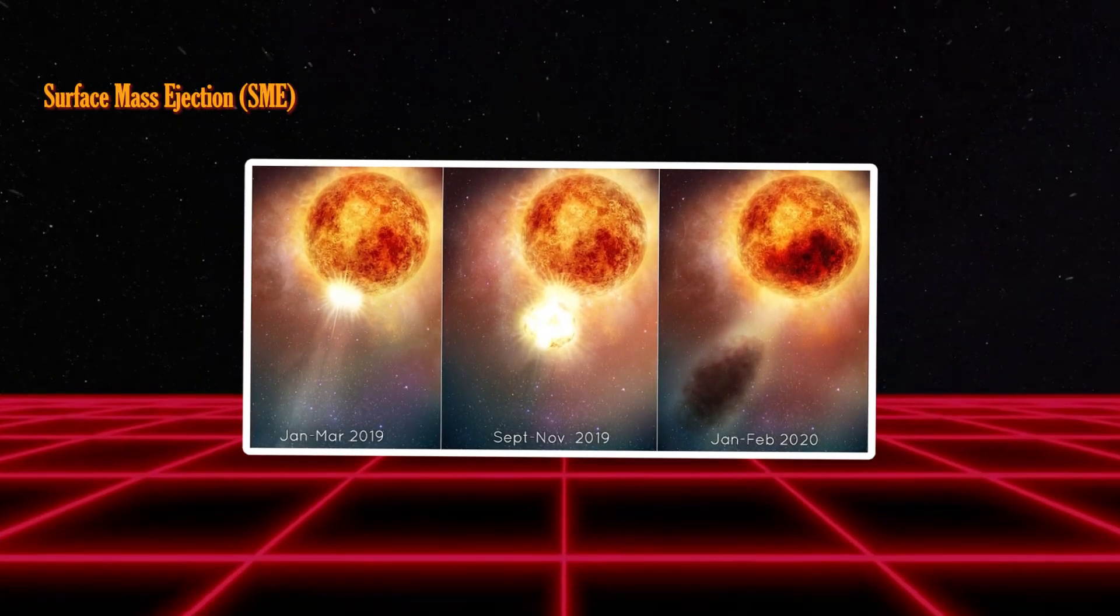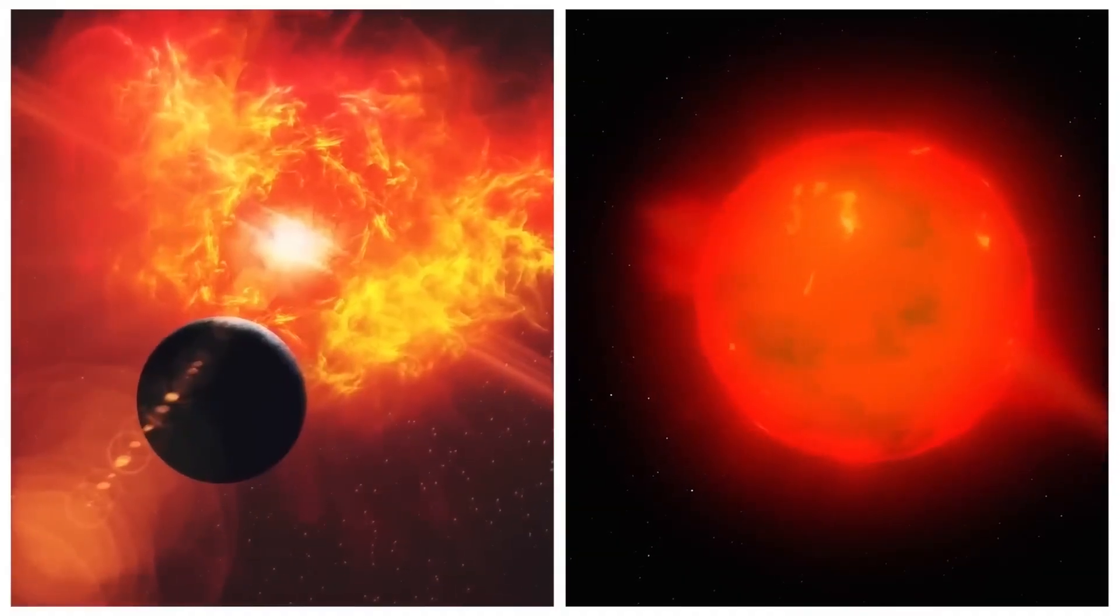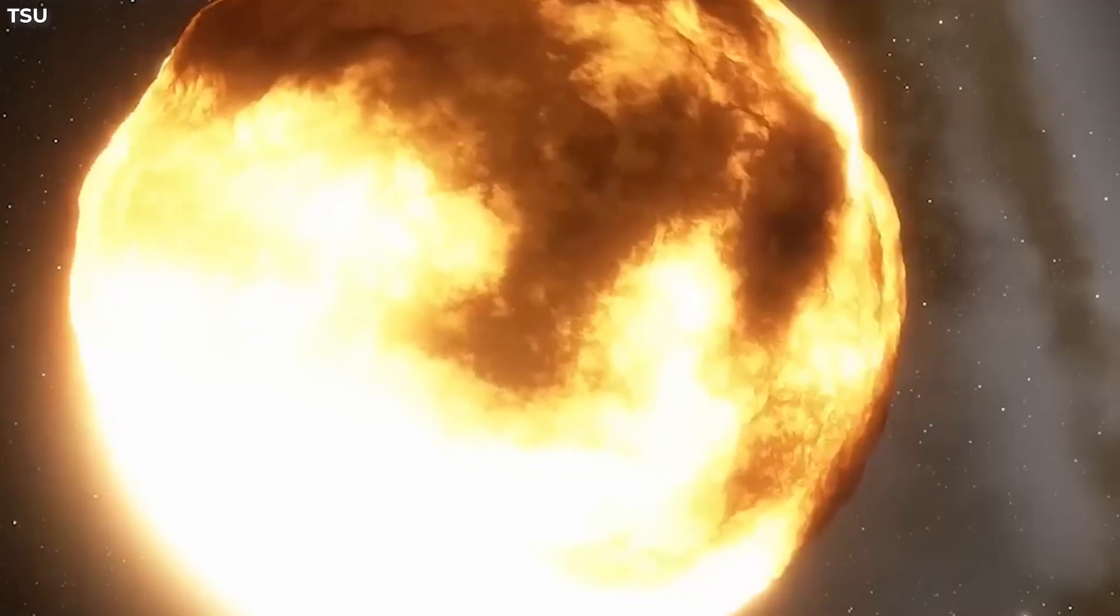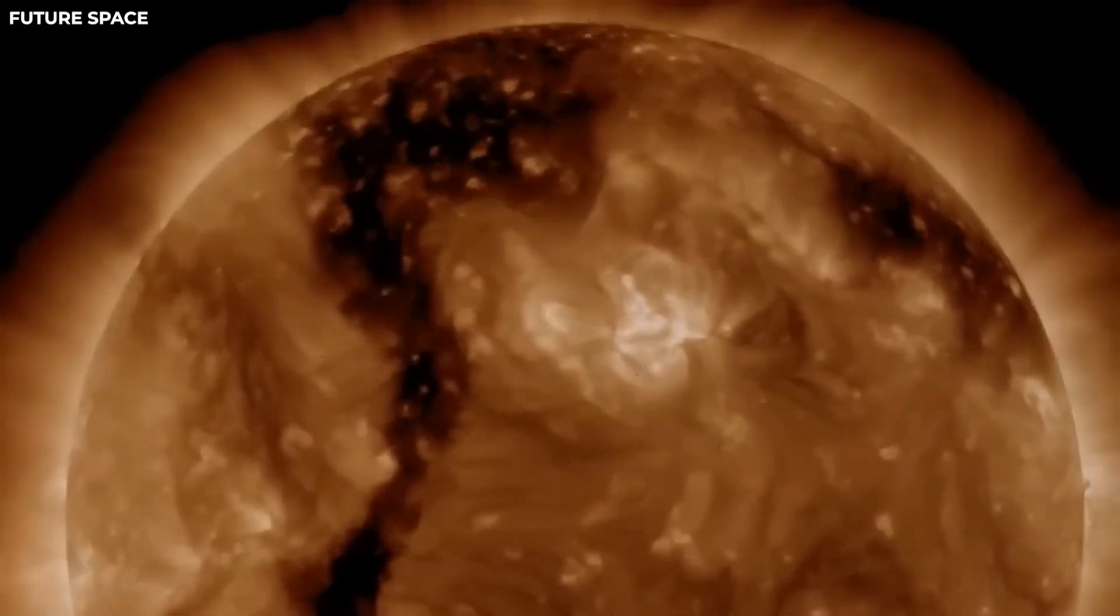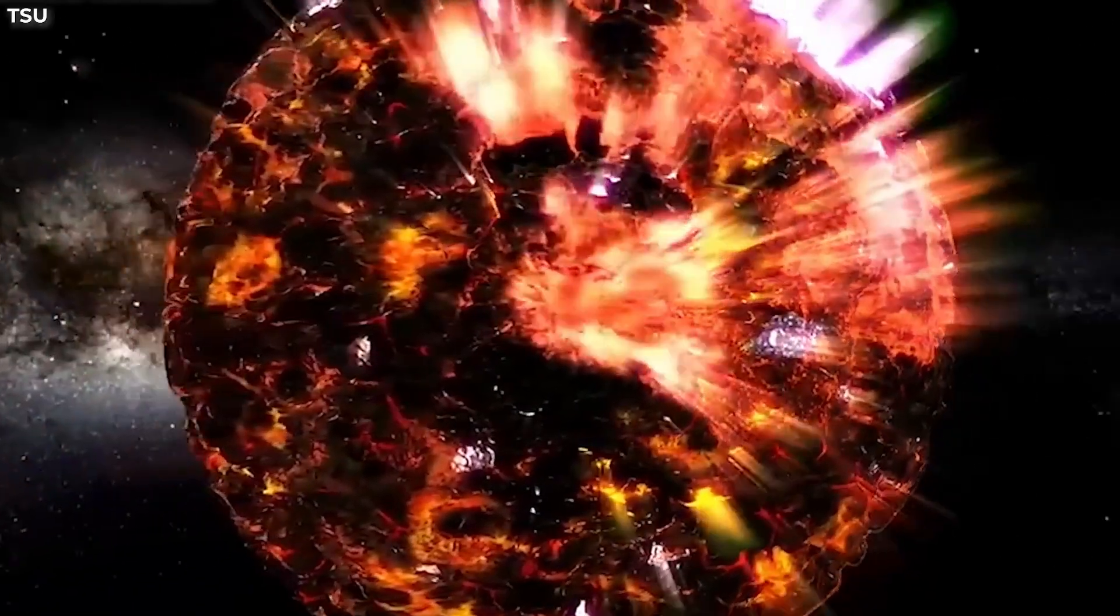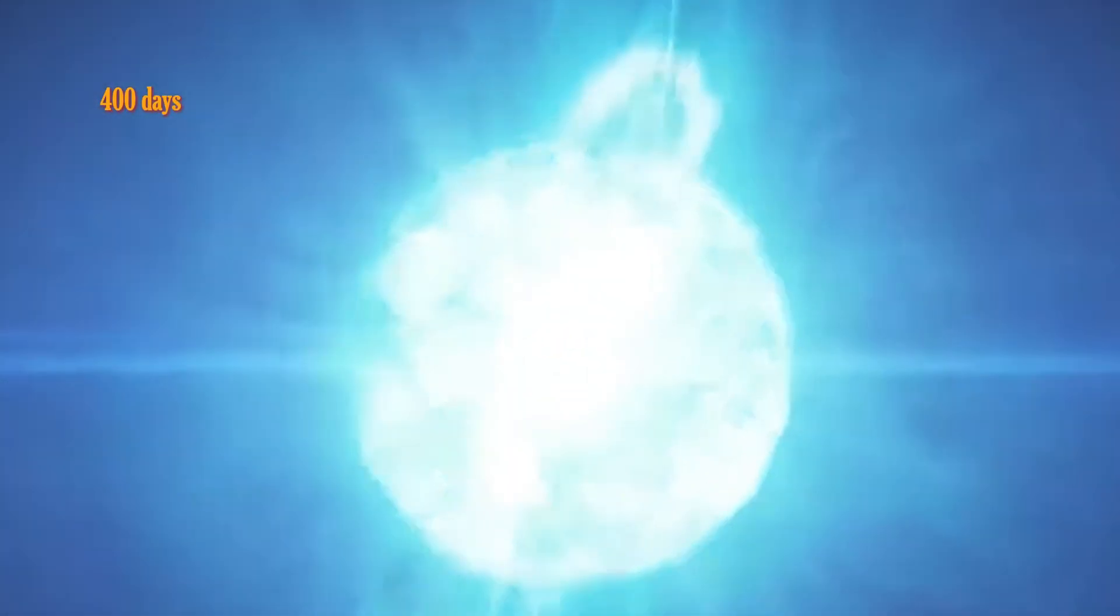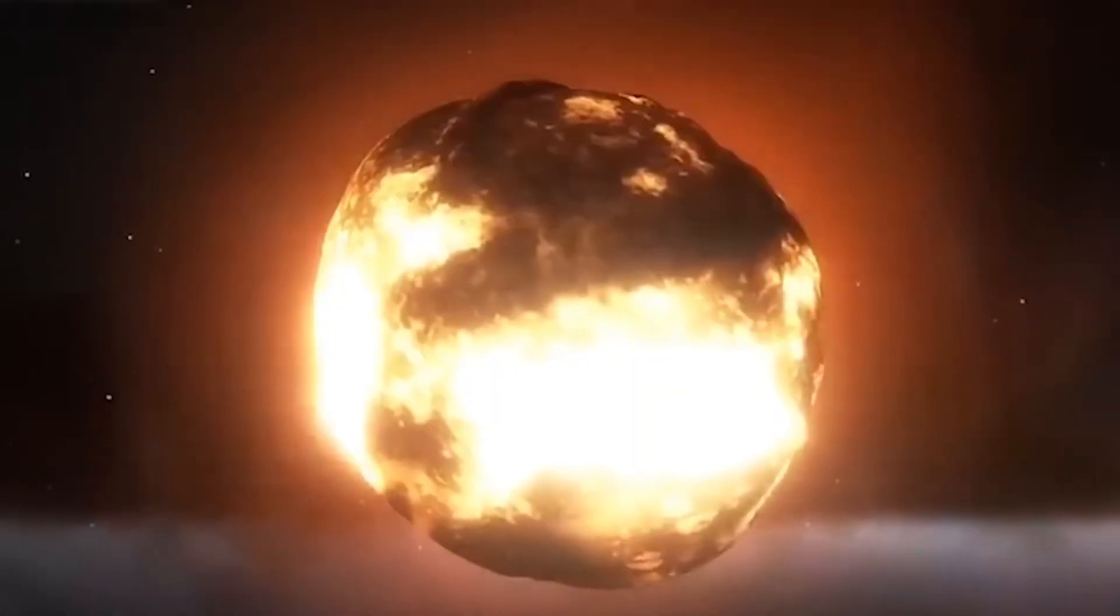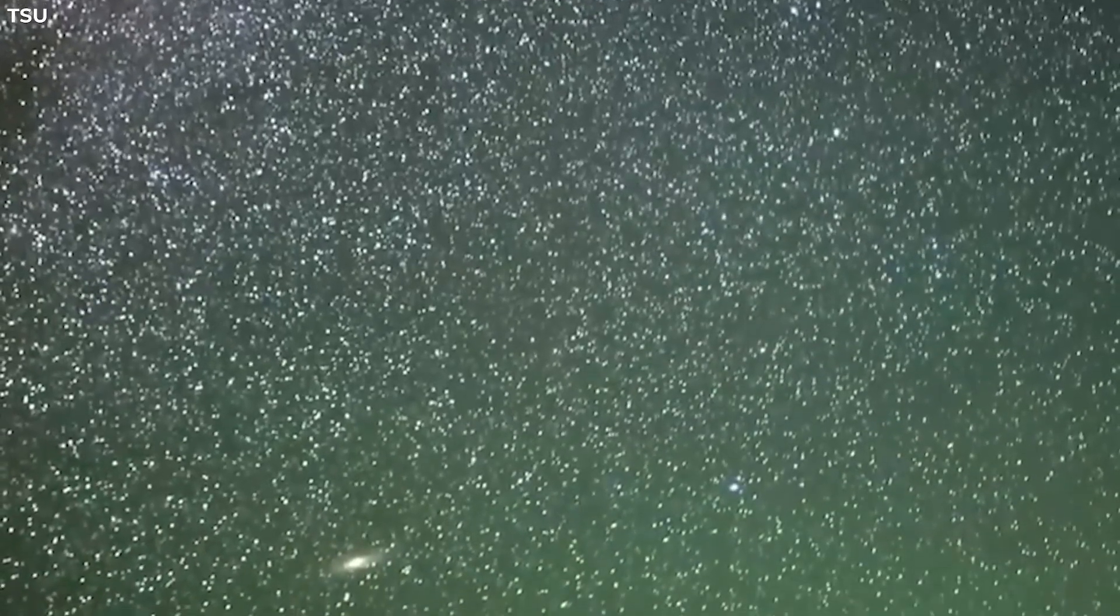But here's the kicker. This SME wasn't just a one-time thing. Betelgeuse shed a significant chunk of its mass, leaving astronomers in awe. It was as if the star had a wild night out, expelled its upper layers. And now, it's slowly recovering from the cosmic hangover. Now, here's where it gets even more interesting. Betelgeuse used to be a predictable pulsating star, changing its brightness every 400 days like clockwork. But post the SME shindig, it's throwing a curveball, pulsating every 200 days. Talk about a star with a newfound rhythm.